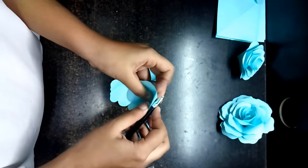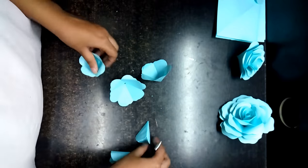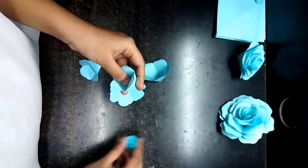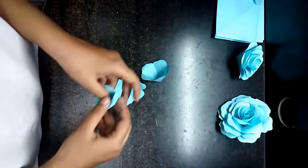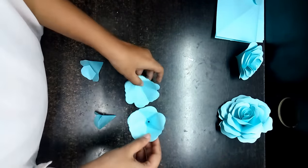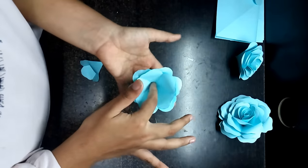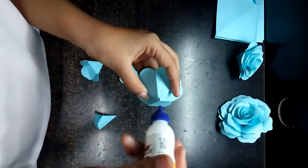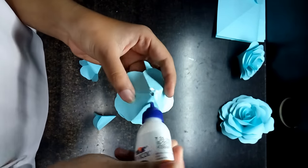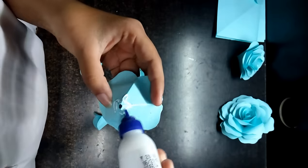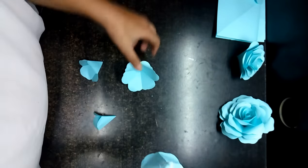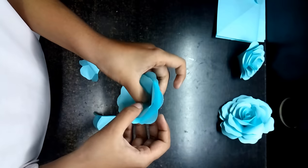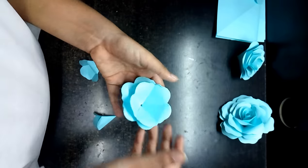Just roughly do it for all the petals. Make it more beautiful. The rest of the three, you can do them like this only. Now we're gonna paste it like this. So first, the second one, apply some glue on its end like this, and just paste it like this.